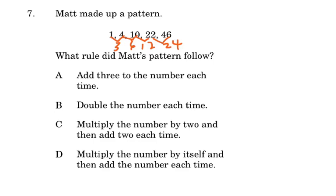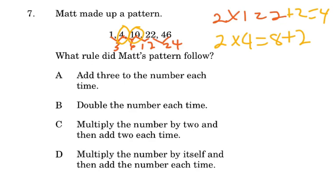So let us double one. Two times one equals two. But what we want is four. So what we need to do is add two to two, we get four. Now when we double four, we get eight. But what we want is ten. So what we need to do is add two more.